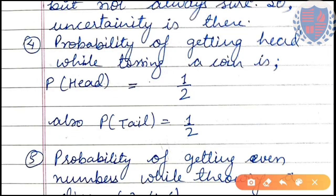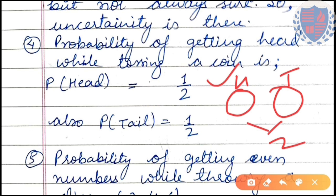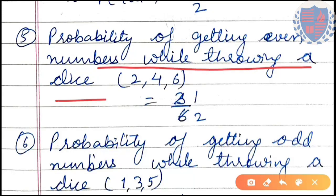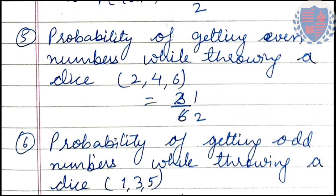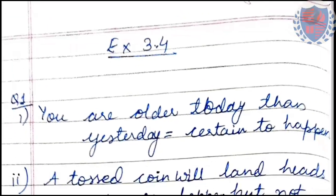Probability of getting head while tossing a coin: total outcomes are 2 (head or tail), favorable cases for head = 1, so probability = 1/2. Similarly, probability of tail = 1/2. Probability of getting even numbers while throwing a die: a die has 6 faces; even numbers are 2, 4, and 6 — that's 3 even numbers. So probability of getting an even number = 3/6 = 1/2. Same for odd numbers: 1/2.